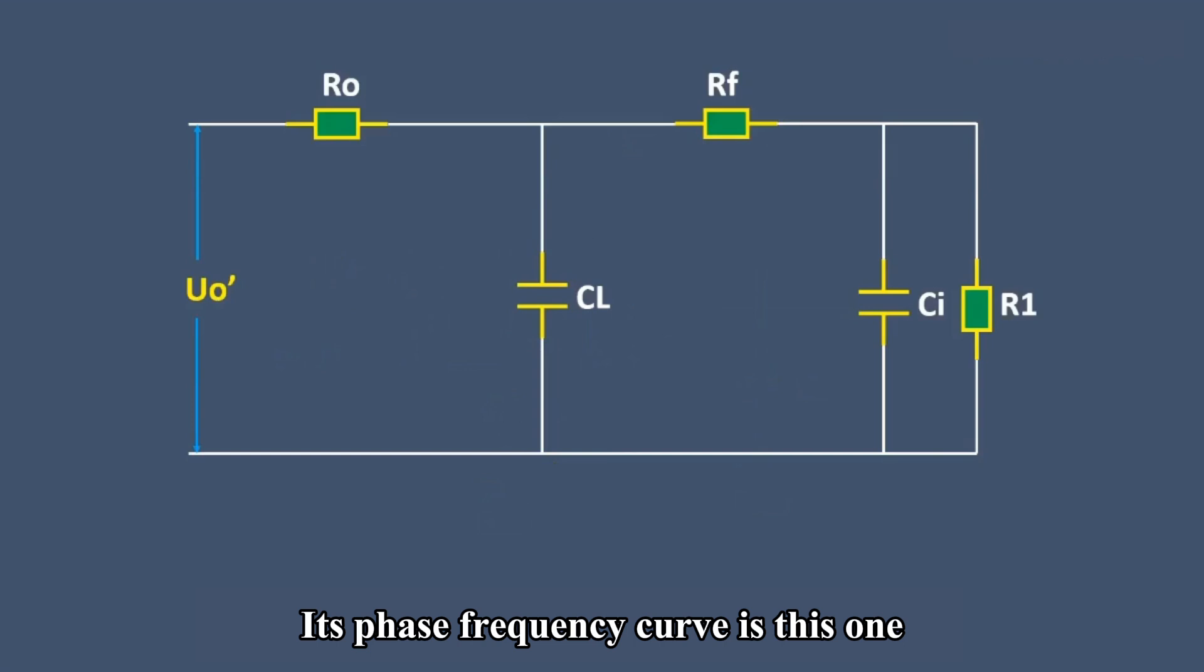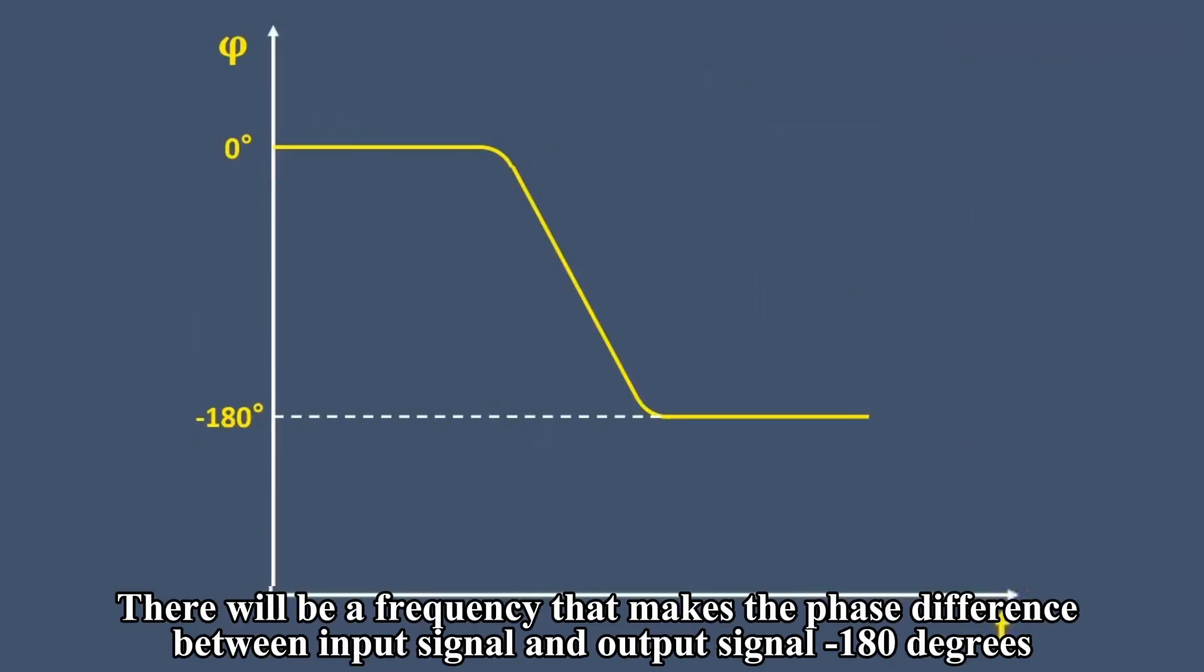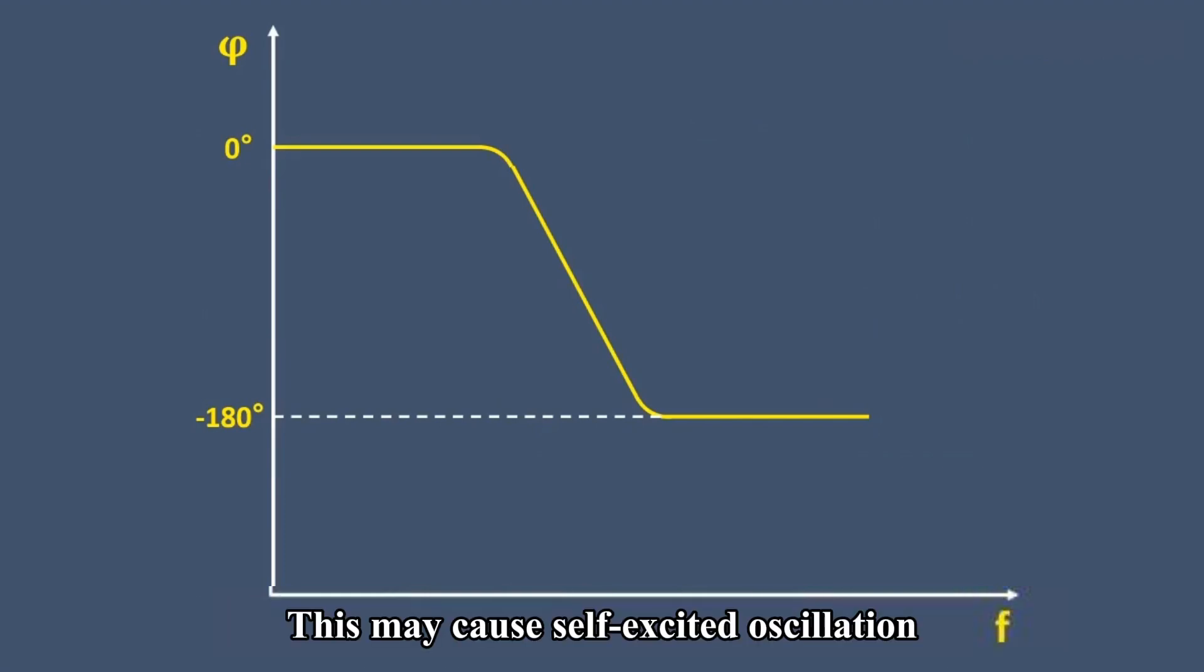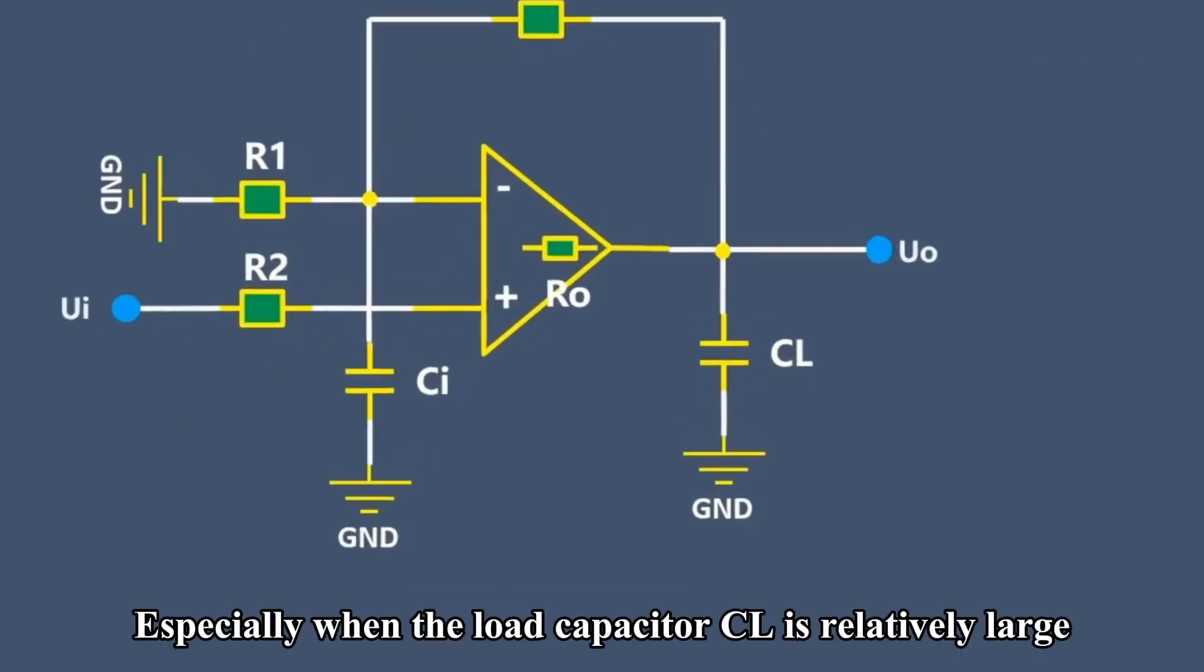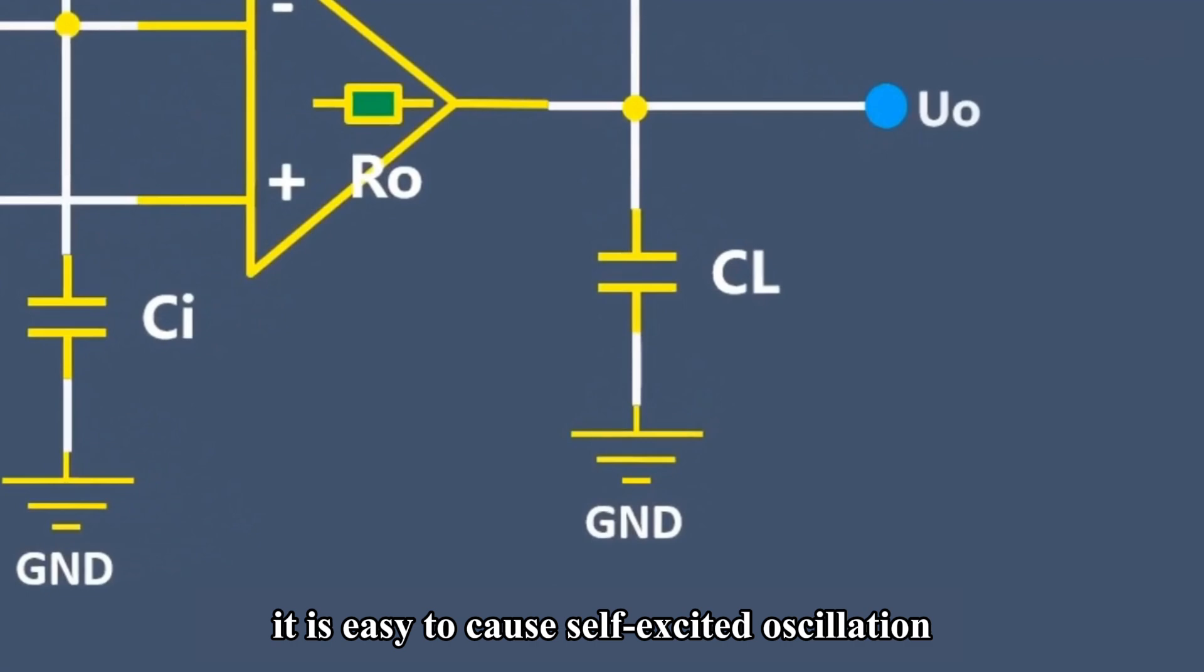Its phase frequency curve is this one. There will be a frequency that makes the phase difference between input signal and output signal 180 degrees. This may cause self-excited oscillation. Especially when the load capacitor CL is relatively large, it is easy to cause self-excited oscillation.